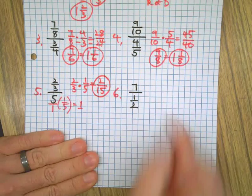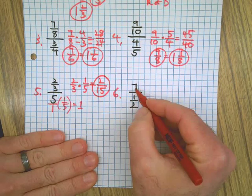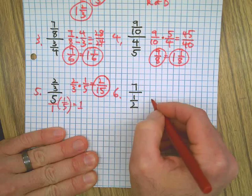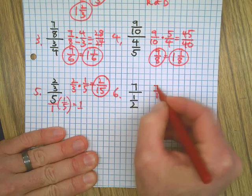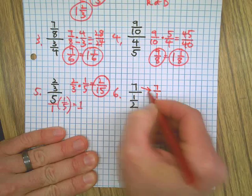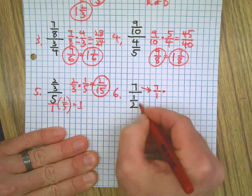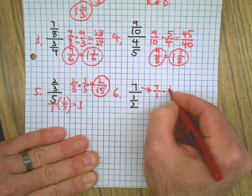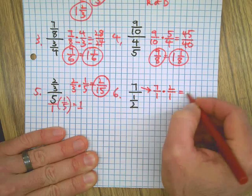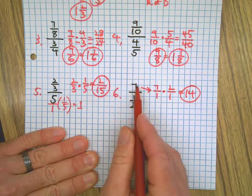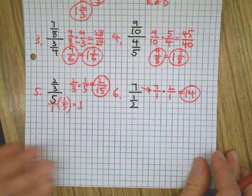And finally, the last one where we have a single number as the numerator - we're just going to flip that denominator. We can add a 1 on the bottom of the numerator if you want to show that it's still a complex fraction. We're going to flip this to get our answer. How did you do?